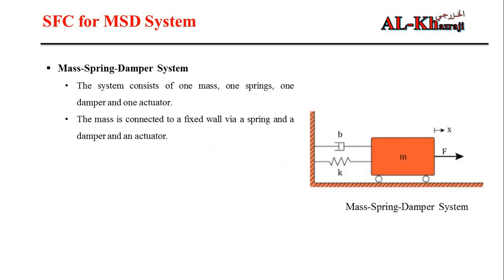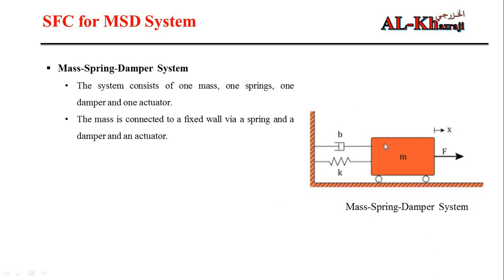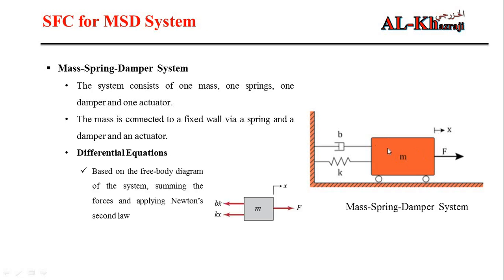We have a system with a spring, a mass, and a force applied to the mass, causing it to move in the x direction. The mass is connected to the wall by a damper and a spring. To derive the differential equation we use the free body diagram and Newton's second law: Force minus the damping force minus the spring force equals mass times acceleration.